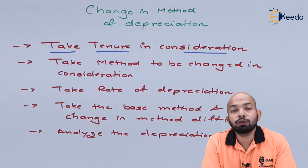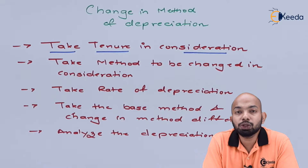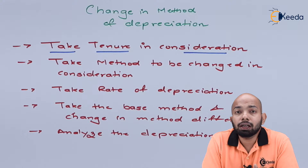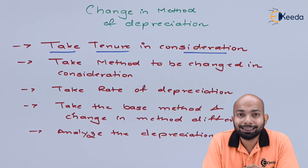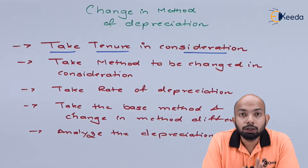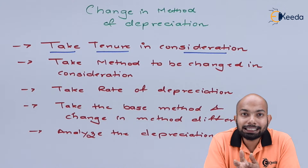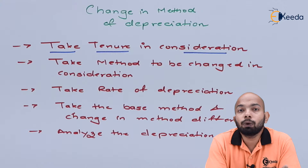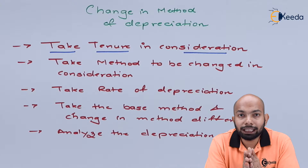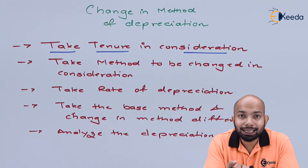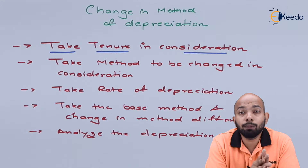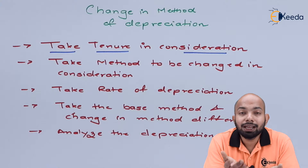For example, if for the first two years you're using SLM method and after that you change to WDV method or any other method such as production method, machine hour rate method, sinking fund, or annuity method, you need to define until what time you will use that method. This helps analyze how much depreciation is being charged and what is its effect on the profit and loss account.